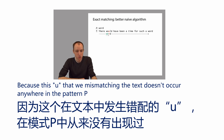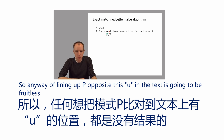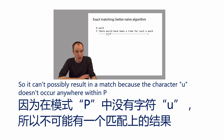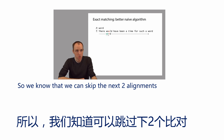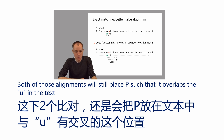But we actually now have a hint that tells us that the next alignment over also is not going to match. Because this U that we mismatched in the text doesn't occur anywhere in the pattern P, any way of lining up P opposite this U in the text is going to be fruitless — it can't possibly result in a match.